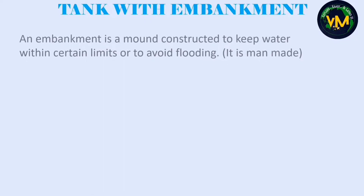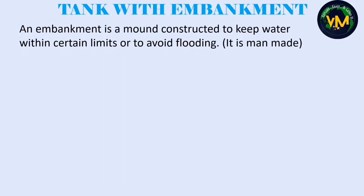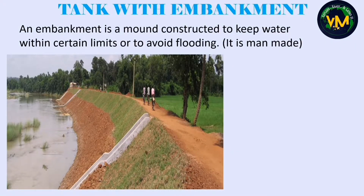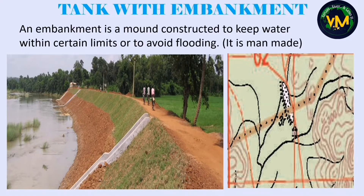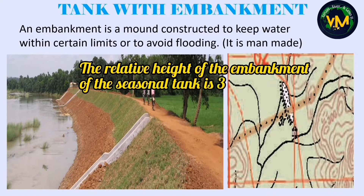Seasonal tanks have water only during the rainy season and are represented in black color with black dots in them. These small black circles in the map are seasonal tanks. An embankment is a mound constructed to keep the water within certain limits — in places where flooding is common, a mound is built to avoid overflow. In the topographical map, you can see black spokes around the tanks as the symbol for an embankment, and the relative height is written near them — here it is written as 3R, meaning the relative height is 3 meters.